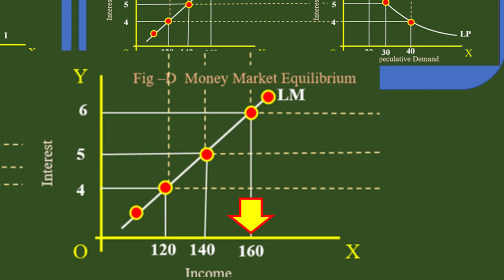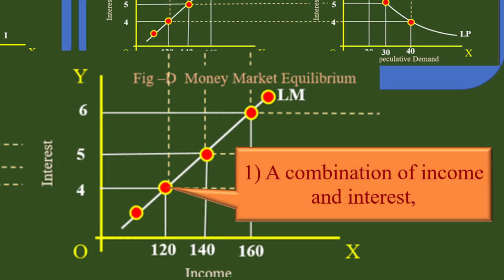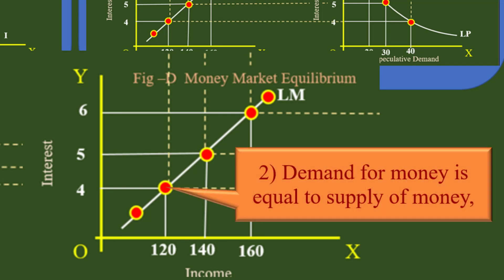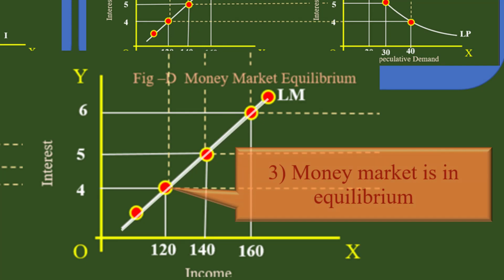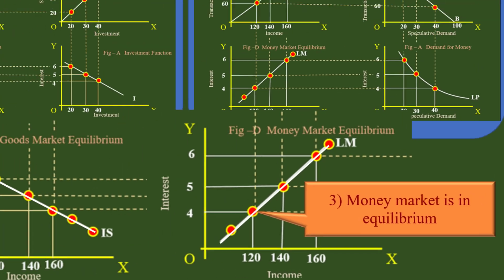Each point on the LM curve represents three things: 1. A combination of income and interest. 2. Demand for money is equal to supply of money. 3. The money market is in equilibrium.